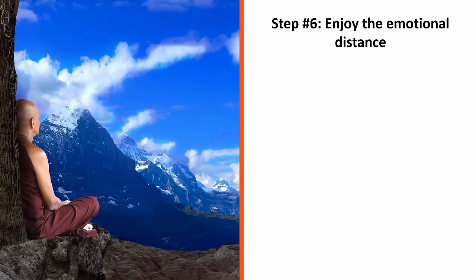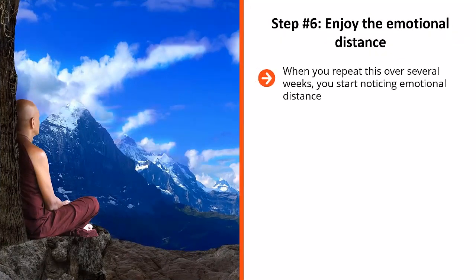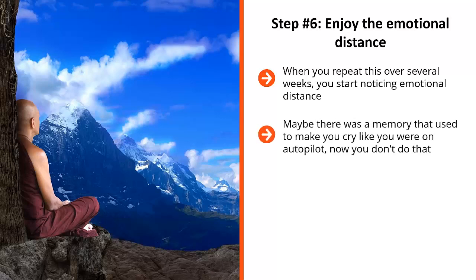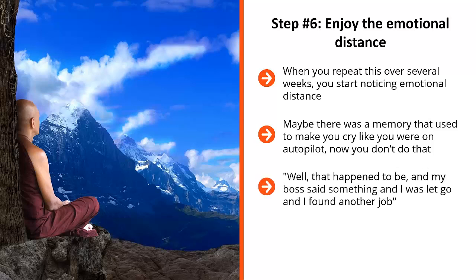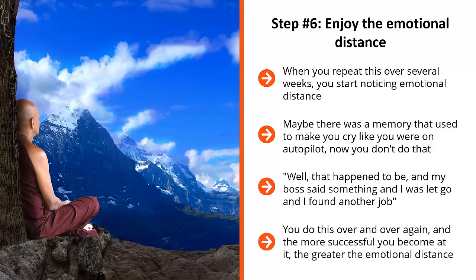Step number six: enjoy the emotional distance. When you repeat this over several weeks, you start noticing emotional distance. Mental images, memories, or what have you that used to throw you off track no longer do. Maybe there was a memory that used to make you cry like you were on autopilot — now you don't do that. You just say, 'that happened to me when I was four years old and my housekeeper was in that memory,' then you let it pass. 'That happened to me, and my boss said something, and I was let go, and I found another job' — you let it pass. 'That was my best friend and my ex-girlfriend' — you let the memory pass. You do this over and over again, and the more successful you become at it, the greater the emotional distance. Eventually, all that stuff that used to drag you down and hold you back is left in the past. Congratulations.